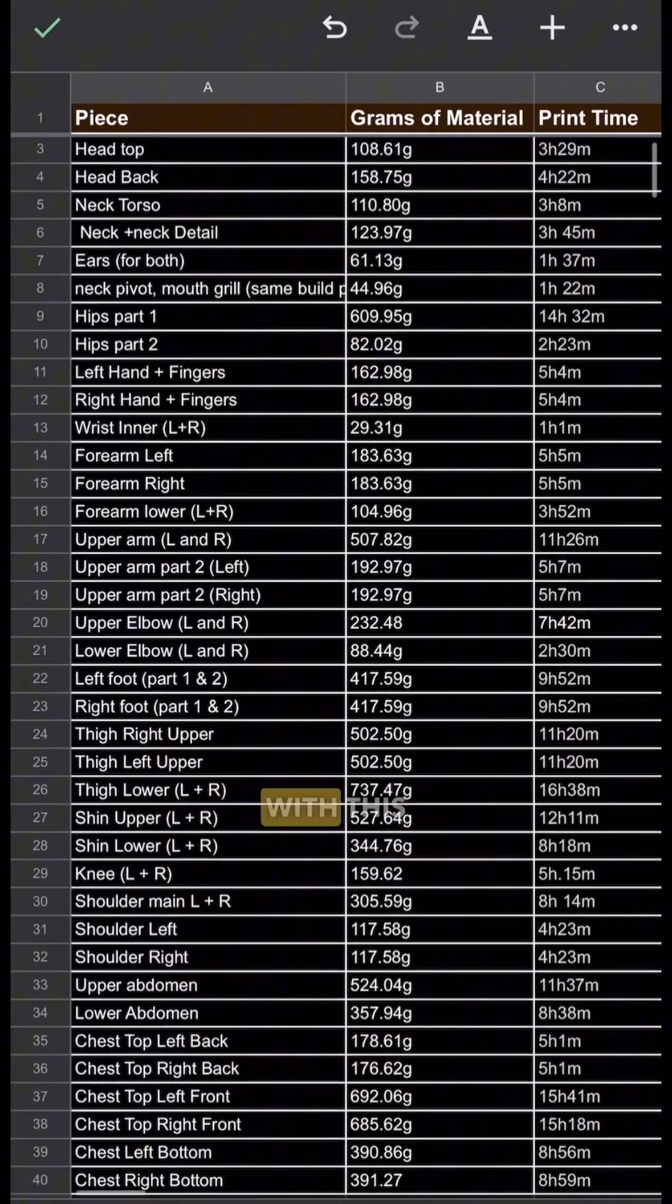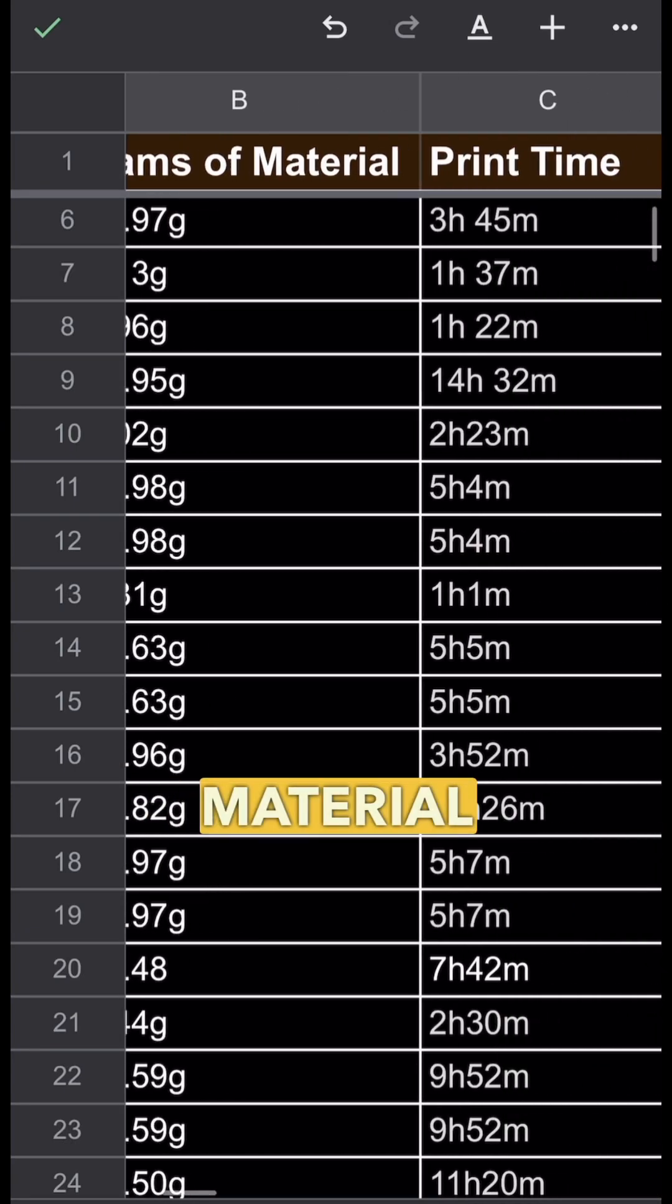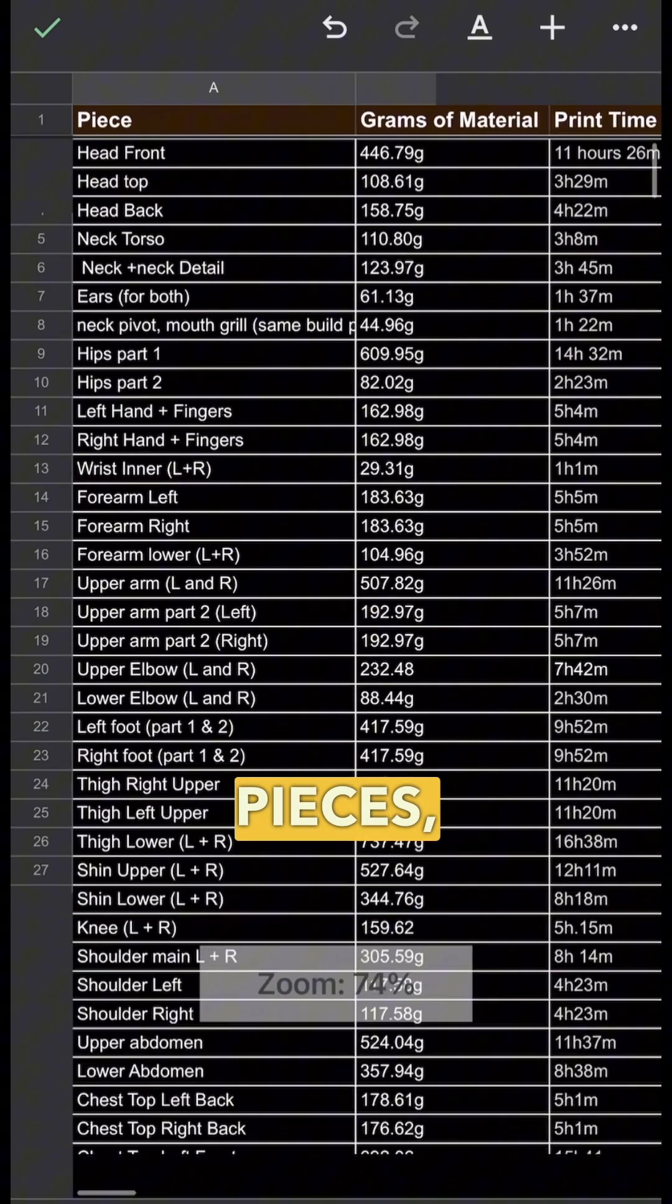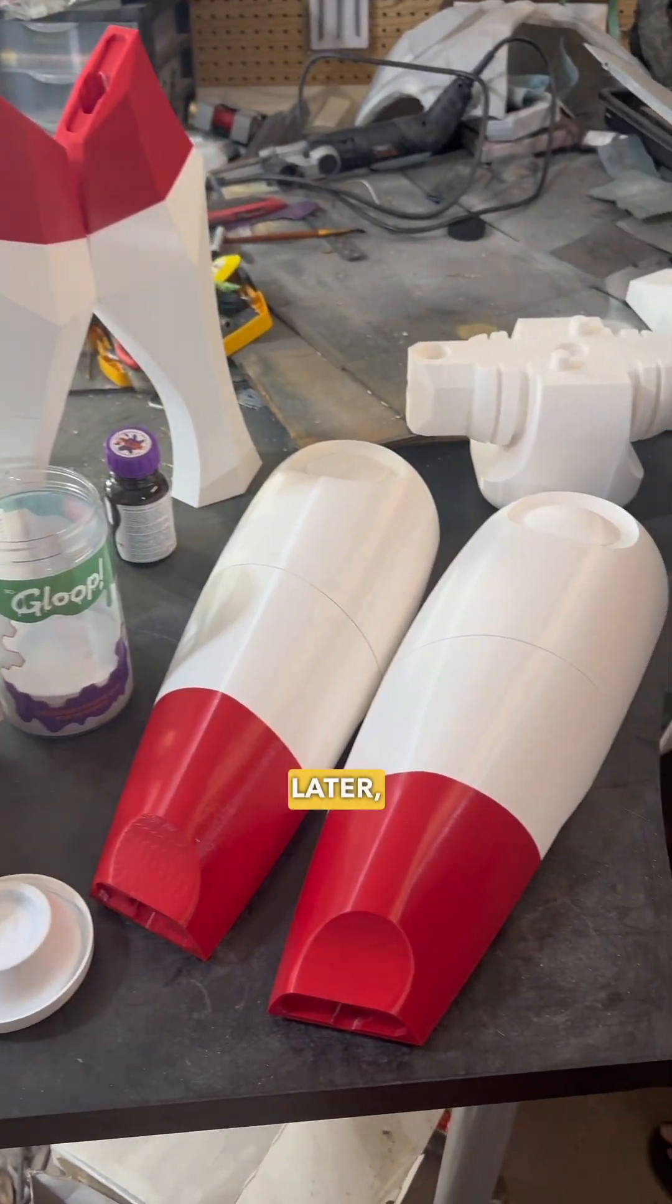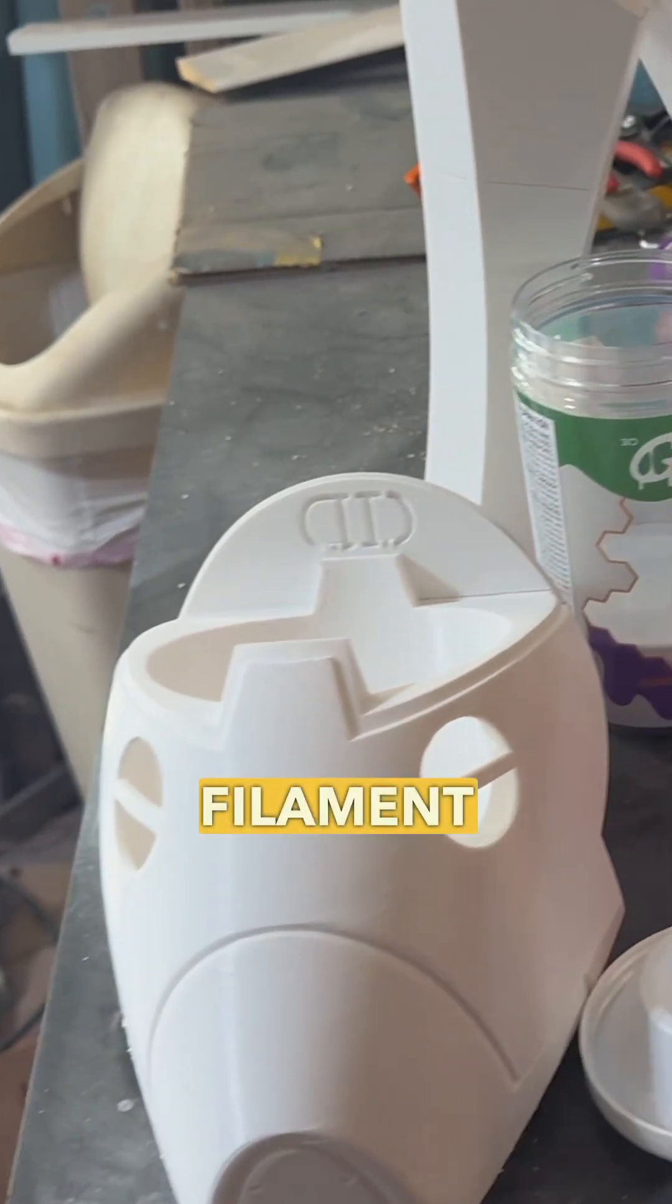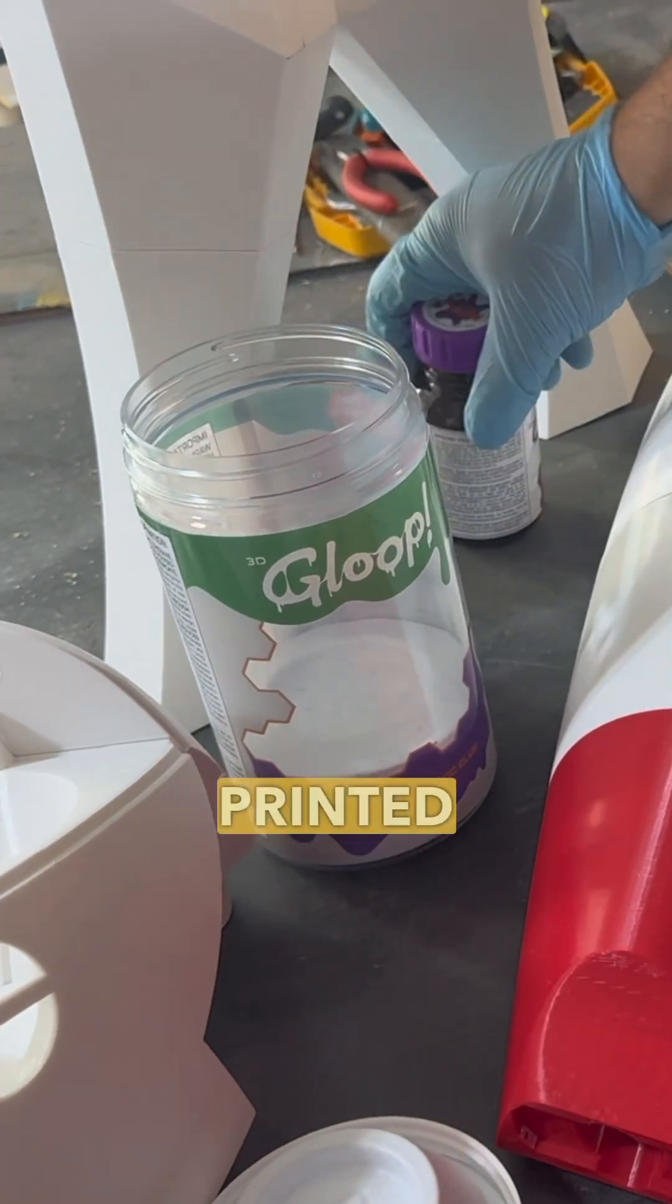We are also being super organized with this droid, down to how many grams of material we're using, the print time for each piece, and being able to lay out all the pieces in one place. Roughly 284 hours later and 23 pounds of filament later, we have our fully printed commando droid.